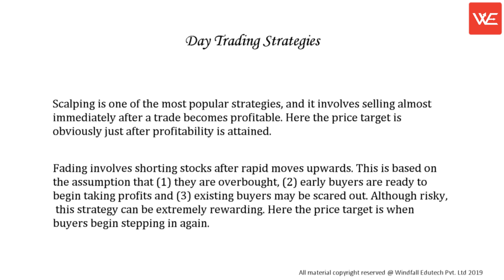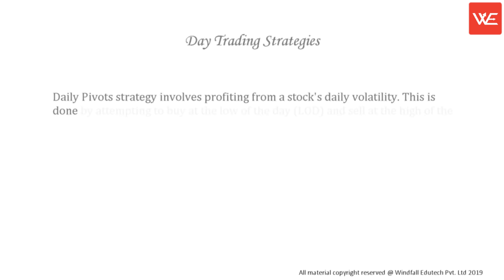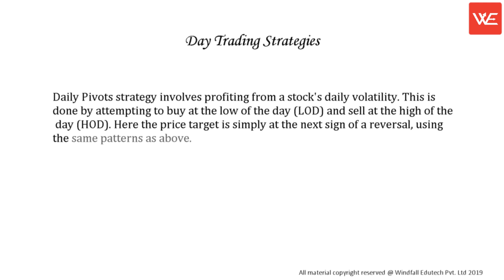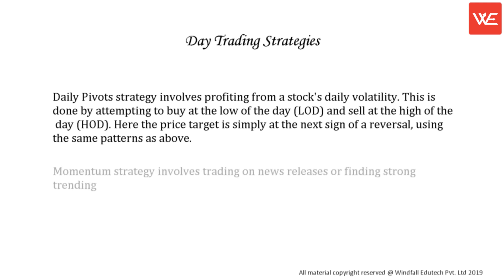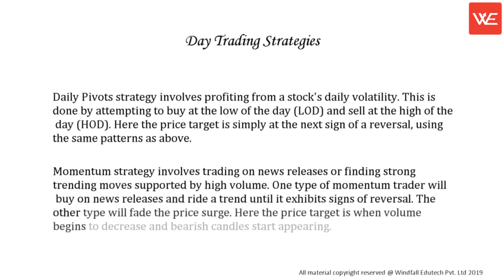In fading, the price target is when buyers begin stepping in again. Daily pivots strategy involves profiting from a stock's daily volatility by attempting to buy at the low of the day and sell at the high of the day — the price target is simply at the next sign of a reversal. Momentum strategy involves trading on news releases or finding strong trending moves supported by high volume. One type of momentum trader will buy on news releases and ride a trend until it shows signs of reversal; the other will fade the price surge. The price target is when volume begins to decrease and bearish candles start appearing.